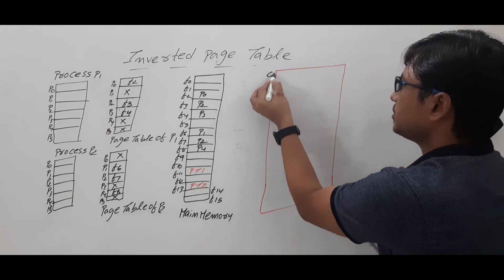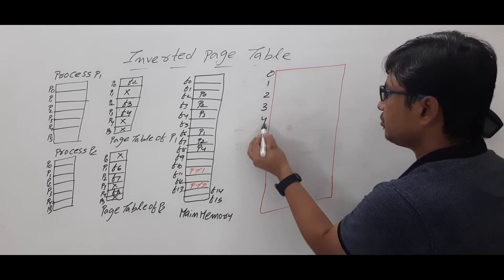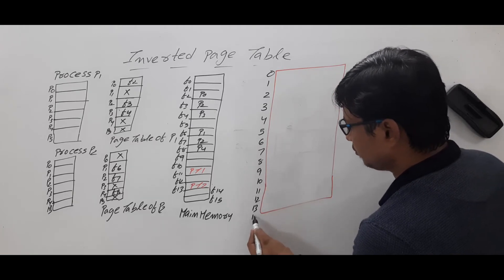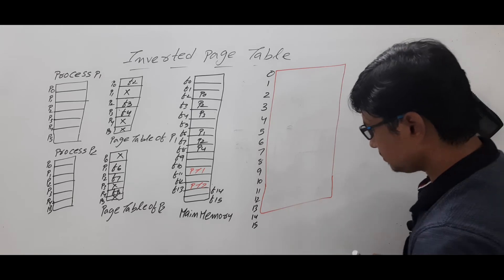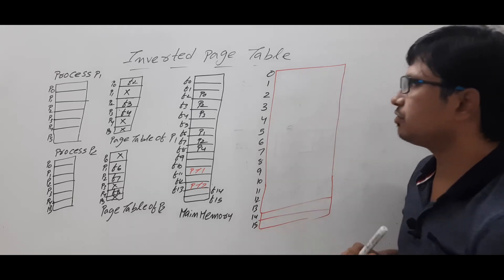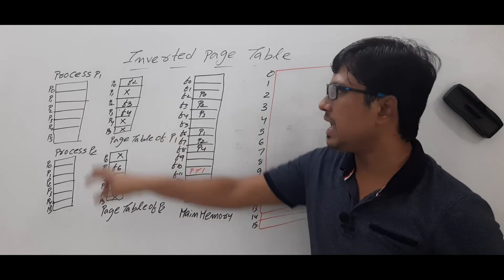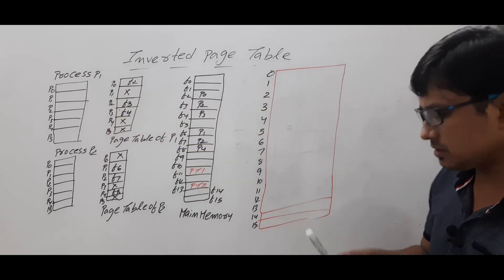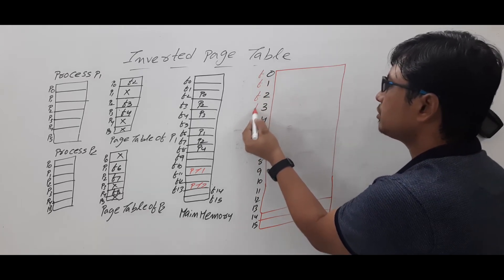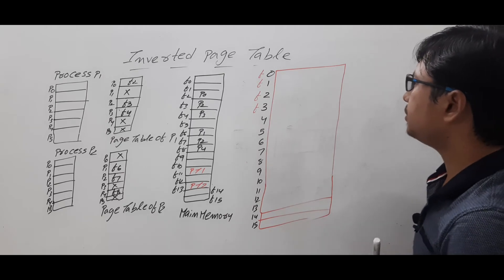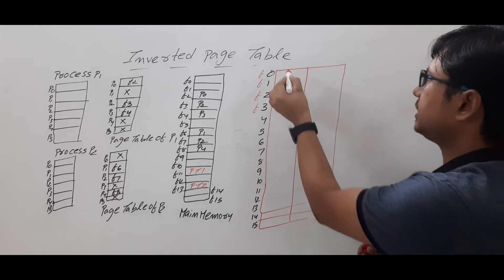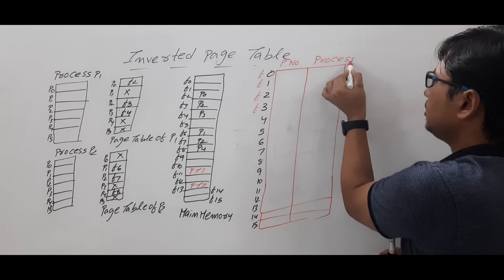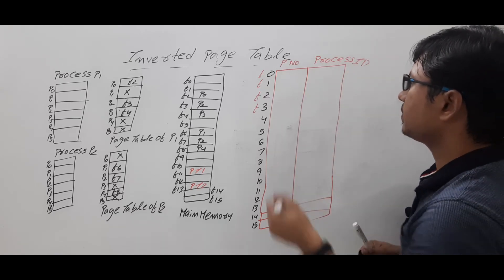The inverted page table uses frame numbers as indices: frame number zero, one, two, three, up to fifteen. Unlike a normal process page table where indices are page numbers, here the indices are frame numbers. Each entry stores the page number and also the process ID — I will explain why the process ID is required.